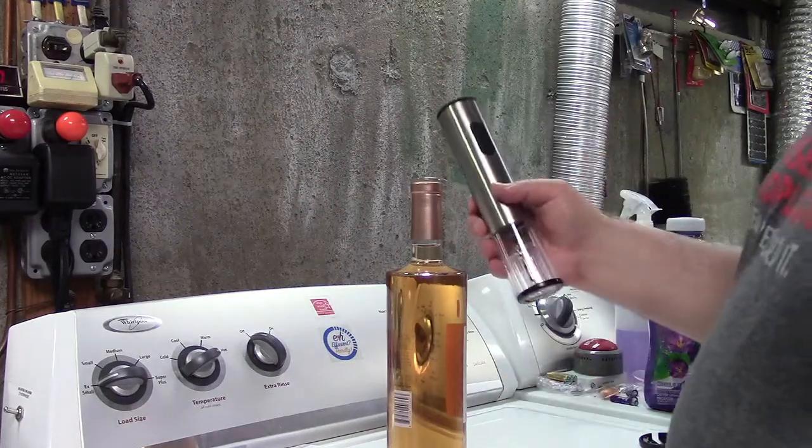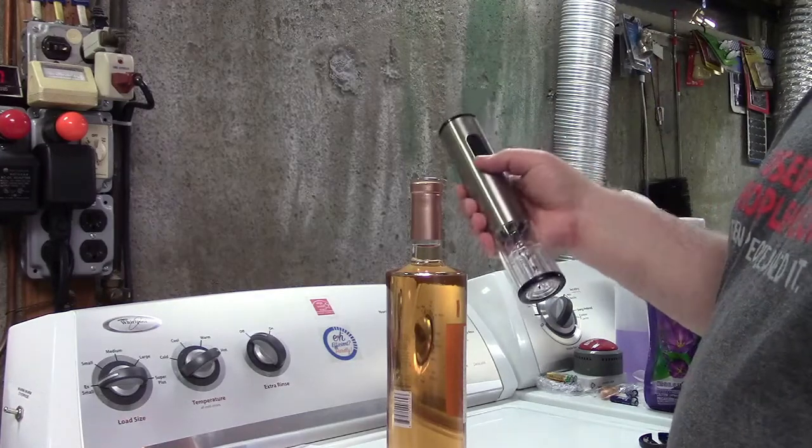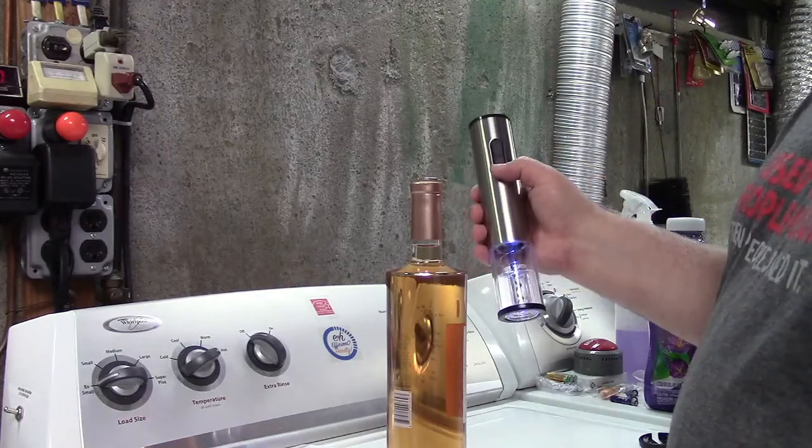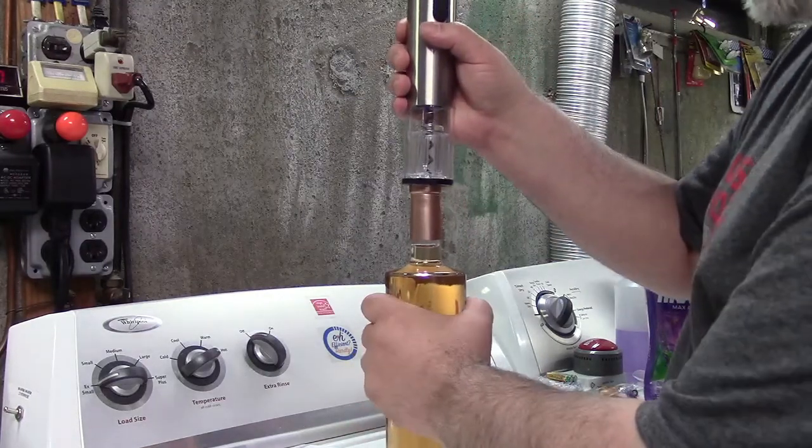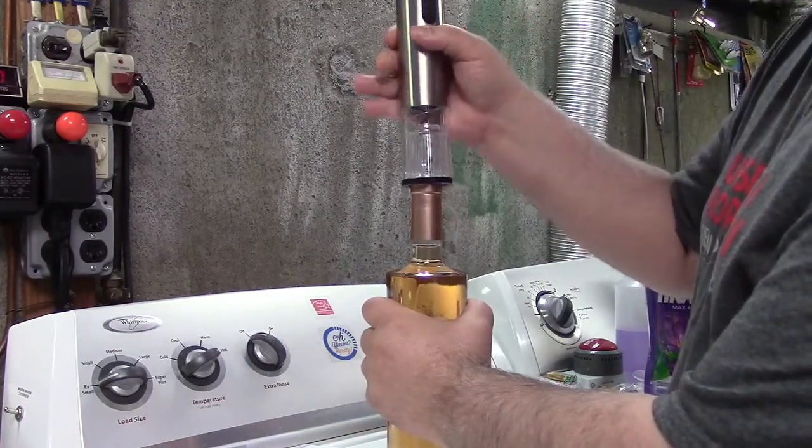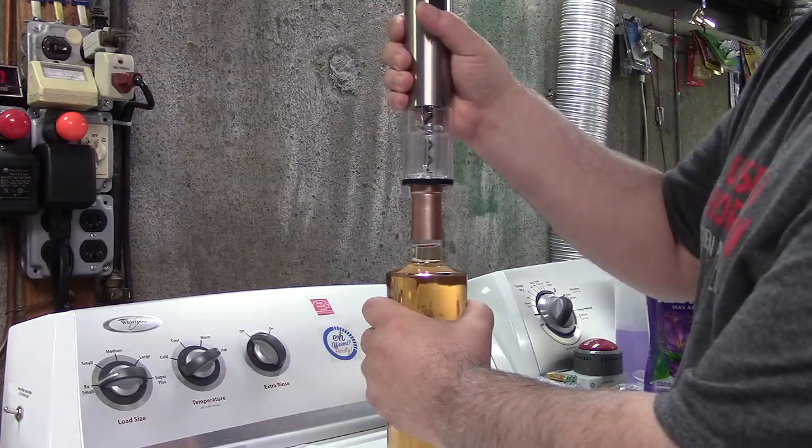And now we place the wine bottle opener on top of the bottle and hold the down button. You see, that's how it goes. So we'll place it on there. Hold the wine bottle itself and the opener and press the down button. Don't let either one spin.